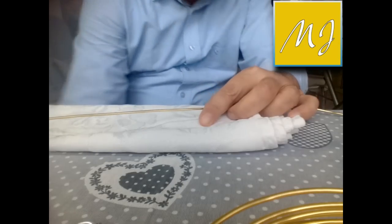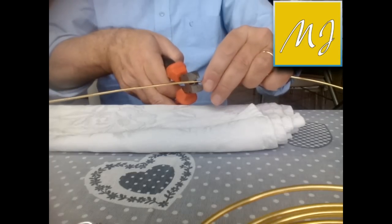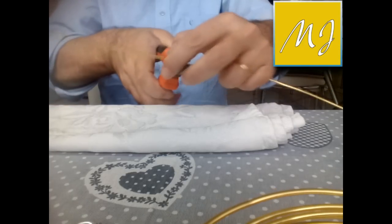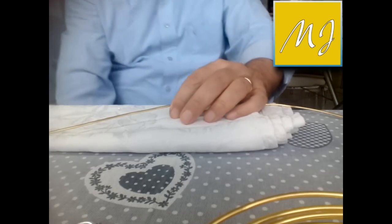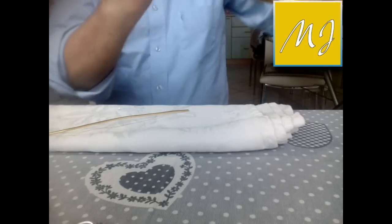Tagliamo con le nostre tronchesine un pezzo di filo all'incirca di 30 centimetri. Poi dipende da quanto grande vogliamo fare l'anello, il disco, la spirale sopra l'anello.